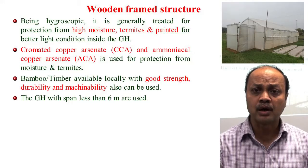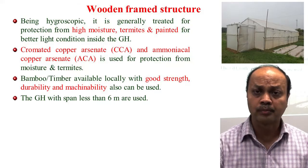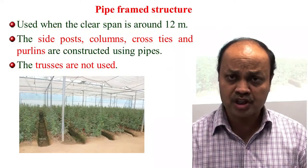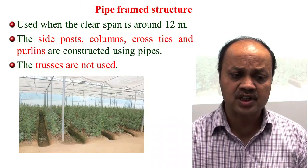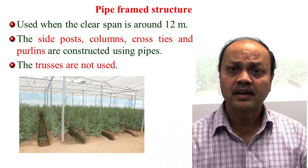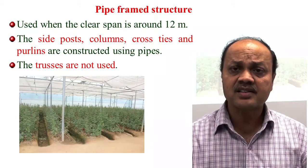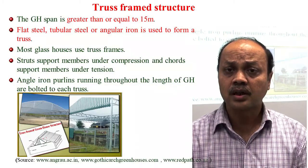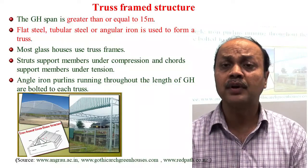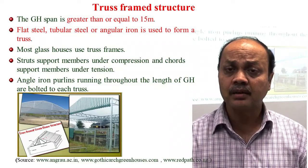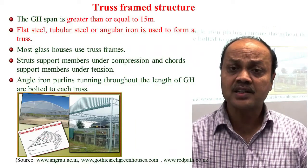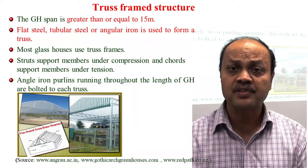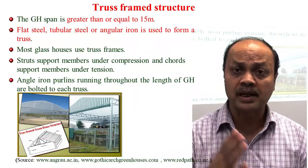When the width of the greenhouse is less than six meters, bamboo or timber frame structures are preferred. When the width is more than six meters, a pipe frame structure is used, where side posts, columns, cross ties, and purlins are made of pipes, but trusses are not used. In a truss frame structure, trusses are used to increase structural strength, which must bear wind load, snow load, and other forces — an area requiring expertise from a civil engineering background.